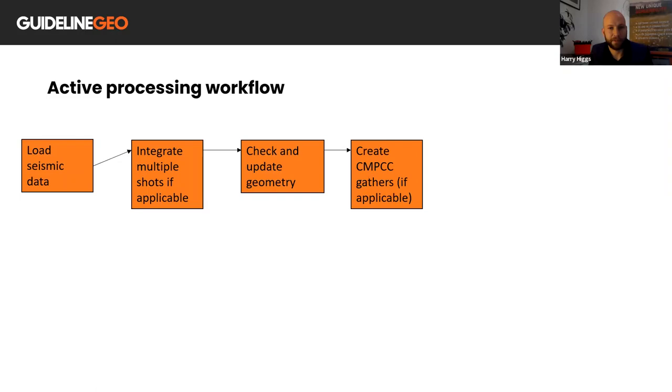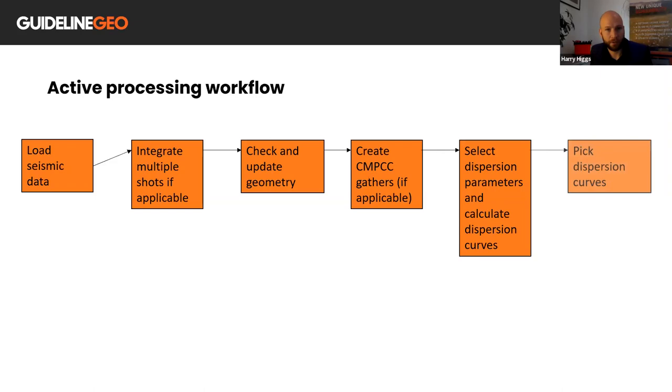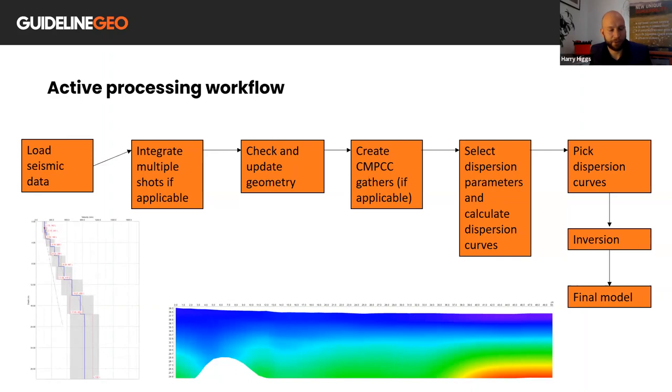Then we want to select our dispersion parameters. This is the velocity and frequency window you want to calculate the spectrum for and then calculate those dispersion curves. Once they have been calculated, we can then pick the dispersion curves and then enter the inversion parameters and run the inversion. And then following that, choose our final models that we want to present.